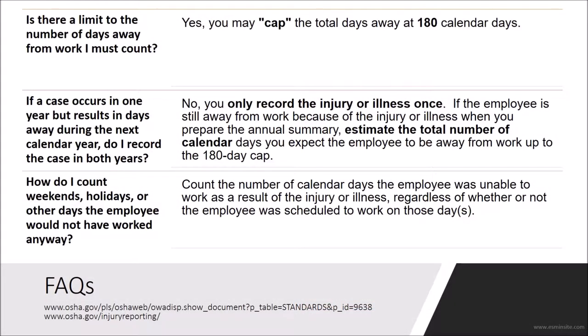Here are a few more frequently asked questions, which you can find, and more, on the links at the bottom of this slide. First, is there a limit to the number of days away from work I must count? Yes, you may cap the total days away at 180 calendar days. If a case occurs in one year but results in days away during the next calendar year, do I record the case in both years? No, you only record the injury or illness once.